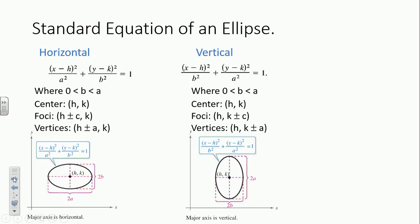Here are the two standard equations for an ellipse. Just as we had horizontal and vertical parabolas, we can also have a horizontal or a vertical ellipse. It looks similar to the equation of a circle — x minus h squared plus y minus k squared equals r squared — however, now we have an a squared and a b squared in the denominator. A has to be larger than b, and b is bigger than zero.